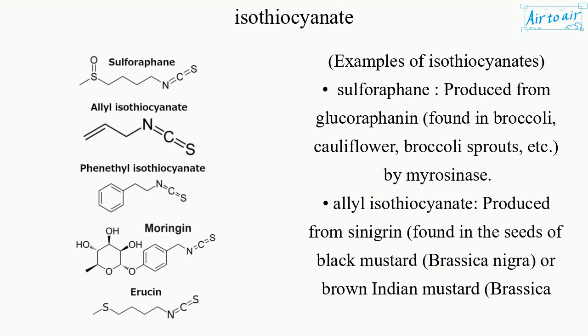Examples of isothiocyanates: sulforaphane, produced from glucoraphanin, found in broccoli, cauliflower, broccoli sprouts, etc., by myrosinase.